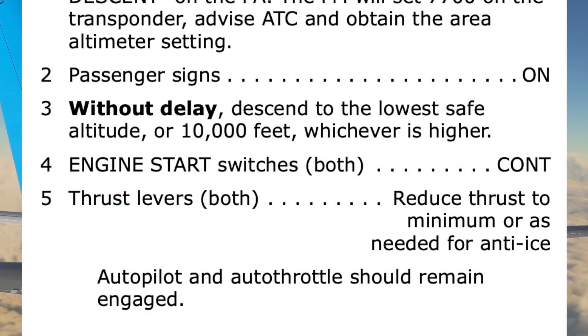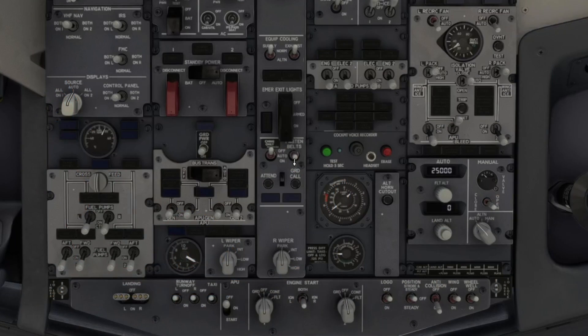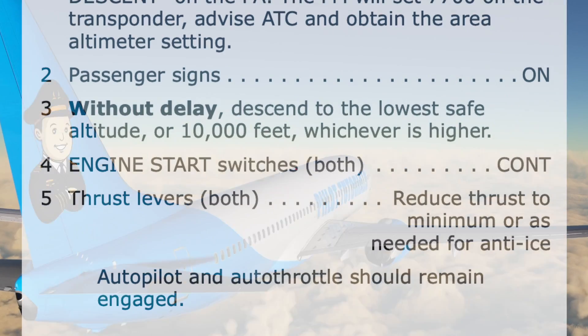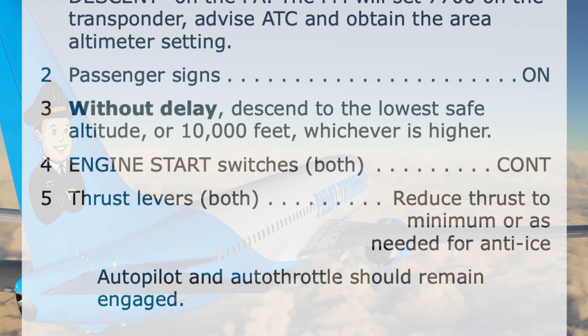Next, the passenger signs are turned on. Step 3 has us descend without delay to the lowest safe altitude or 10,000 feet, whichever is higher.